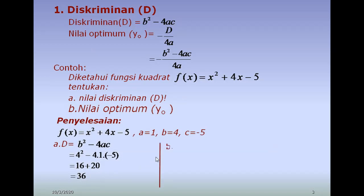Dan yang kedua, kita akan mencari nilai optimumnya dengan rumus min D per 4A. D-nya sudah kita dapatkan, yaitu 36. Kita gantikan: min 36 per 4 kali 1. 4 kali 1 adalah 4. 36 dibagi 4 hasilnya negatif 9. Kita sudah mendapatkan nilai optimumnya adalah negatif 9.